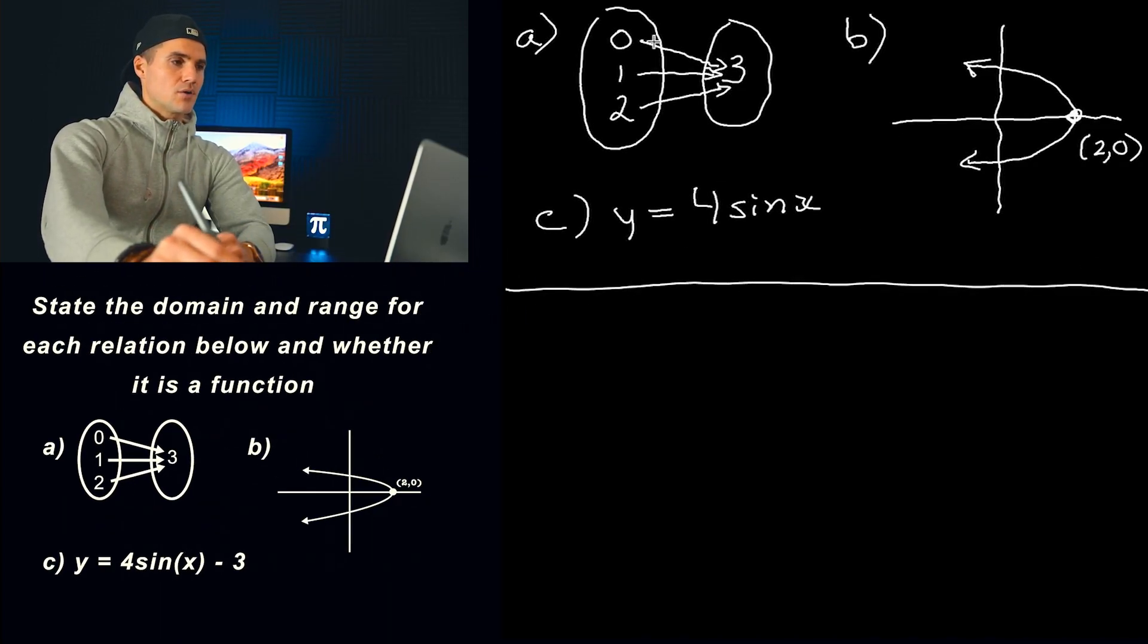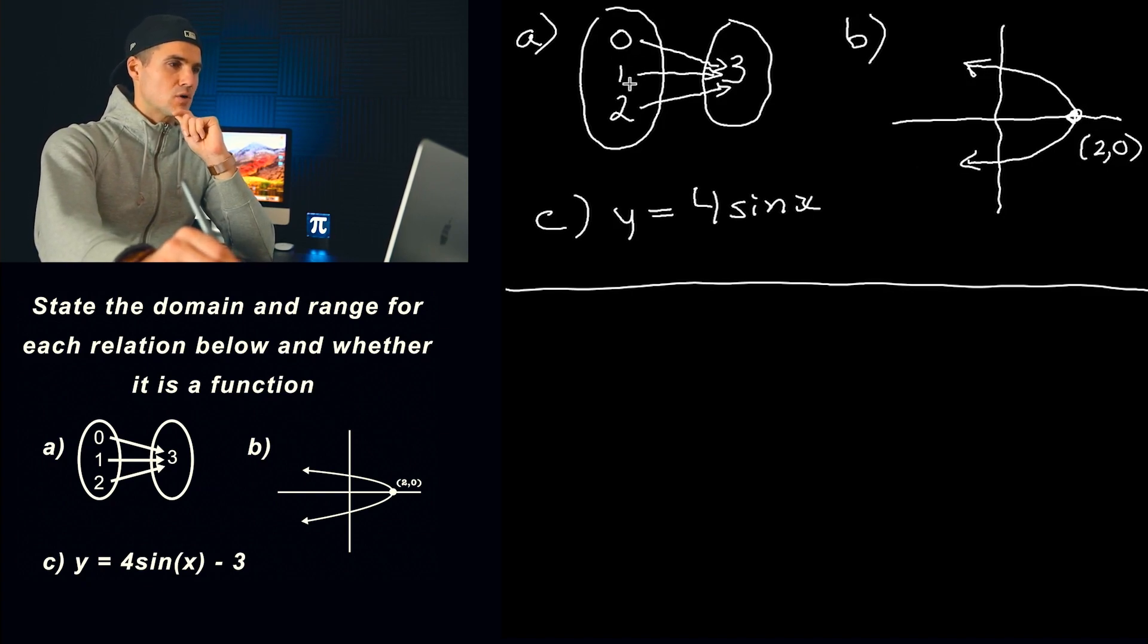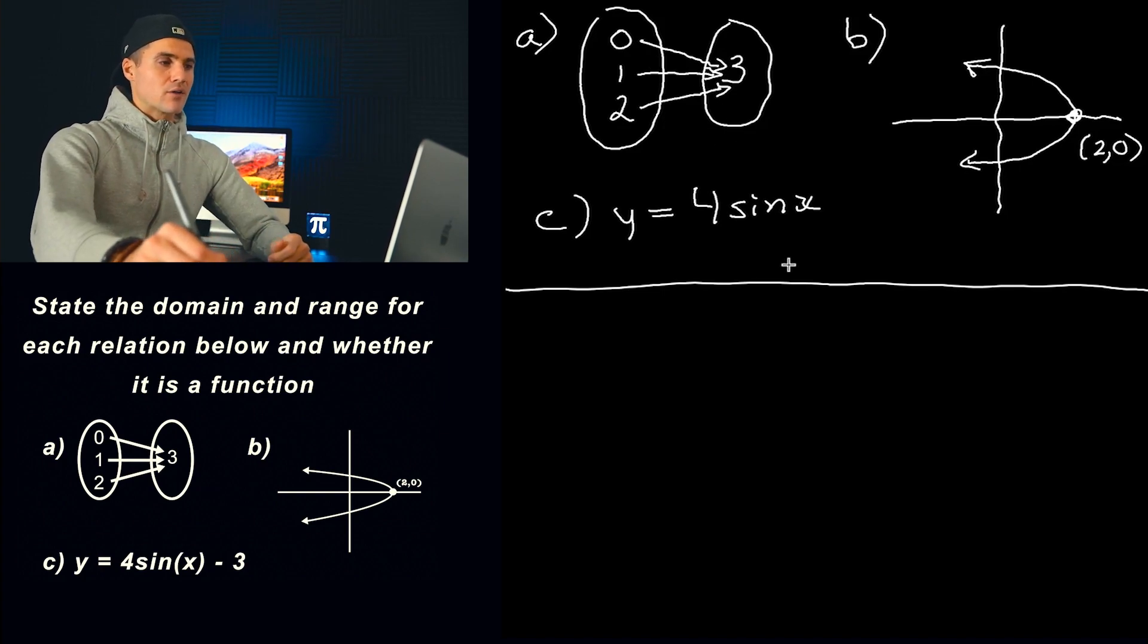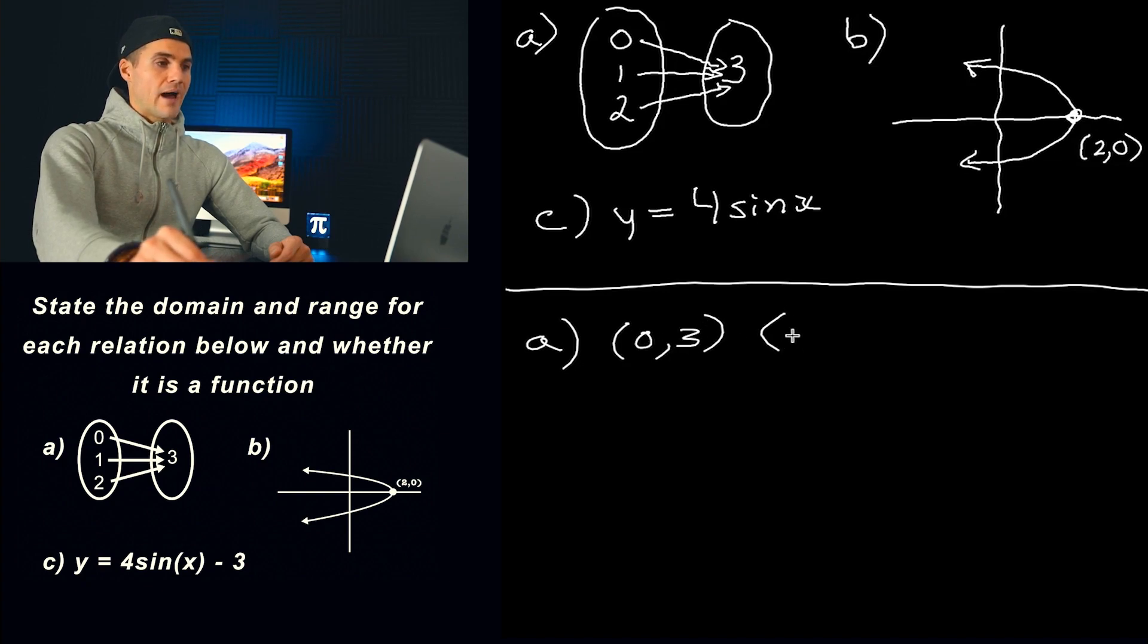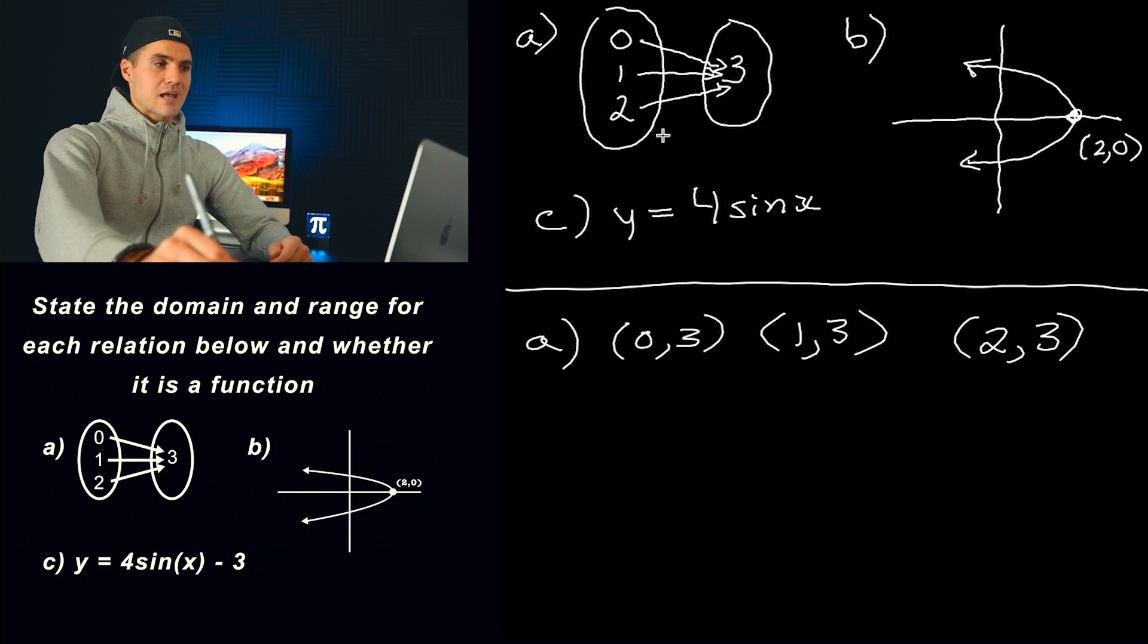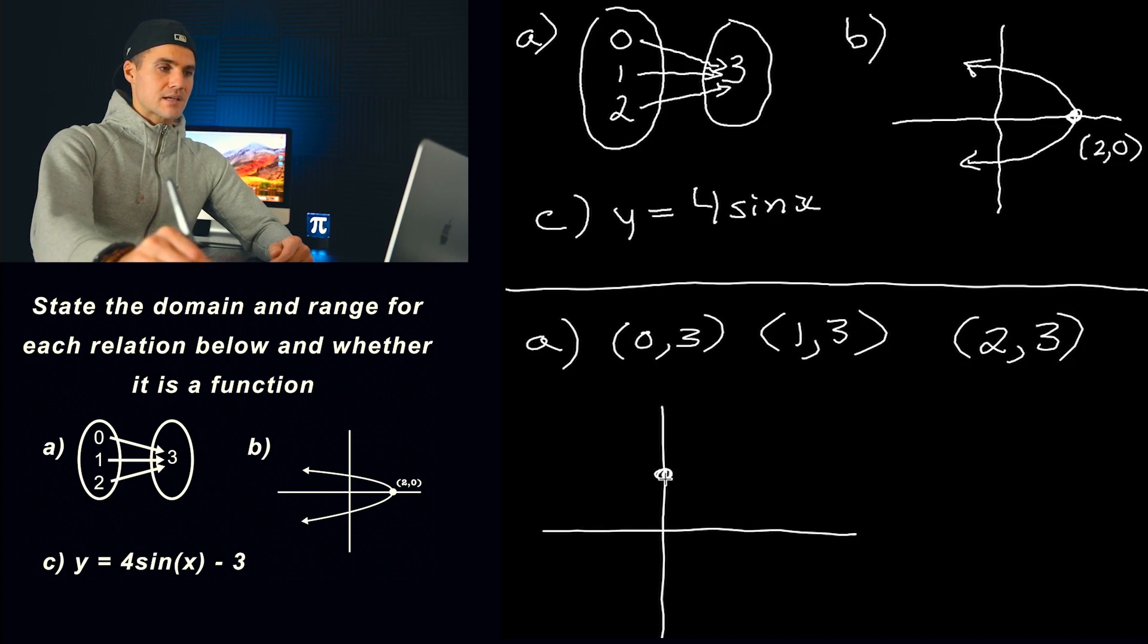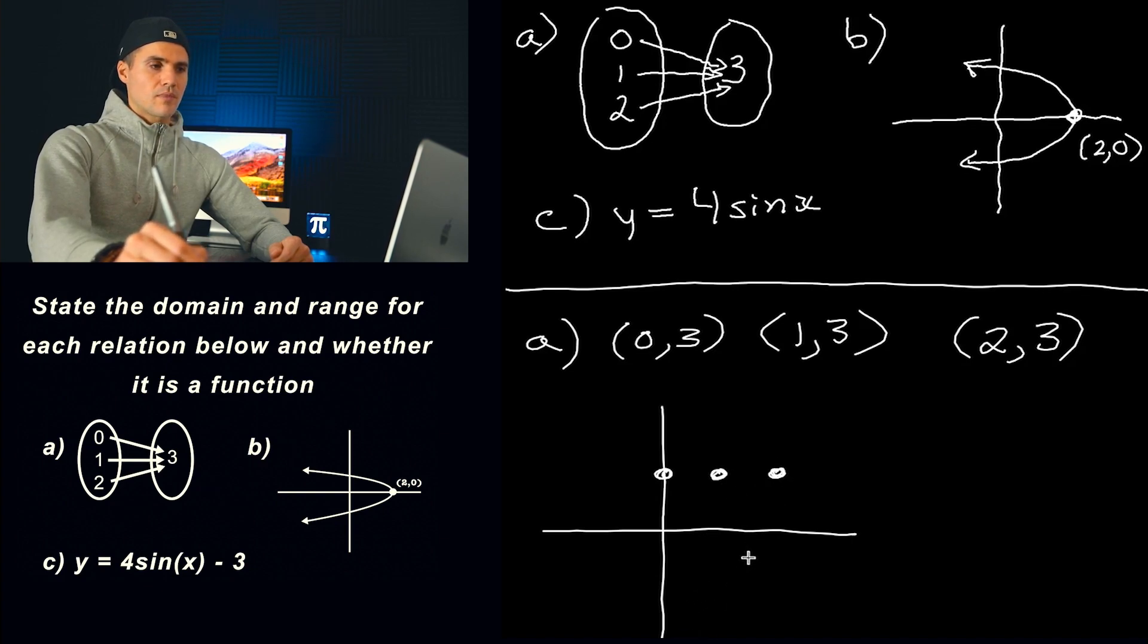So we got part A here. Notice that we have this mapping diagram. We got 0, 1, 2 for the x values and they're all pointing to this y value of 3. So personally what I like to do with these kinds of questions is I like to take a diagram like this and convert it to just coordinates. So notice that we'll have an x value of 0 and a y value of 3, an x value of 1 and also a y value of 3, and then an x value of 2 and a y value of 3. So these set of coordinates is the exact same as that mapping diagram. And then what you can do is you could quickly plot these. So 0 and 3 that's like here, 1 and 3 that's over here, and then 2 and 3 that's right there.